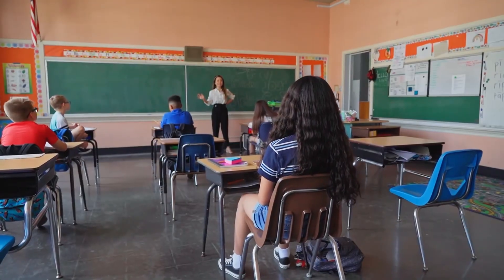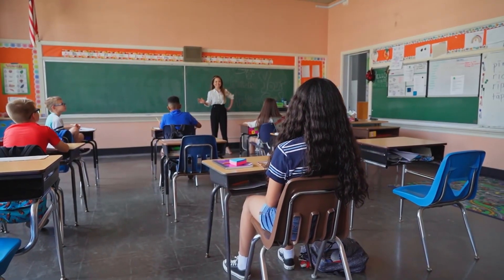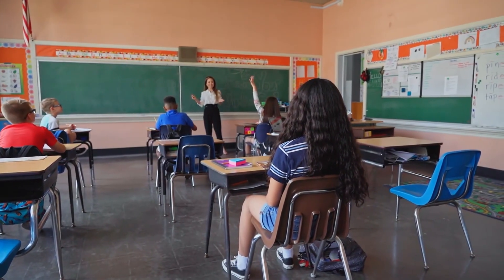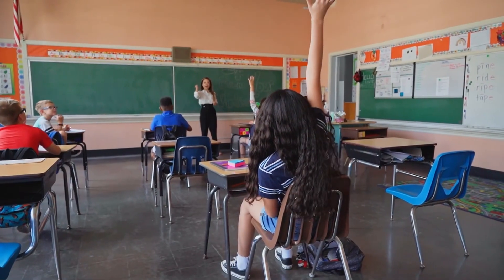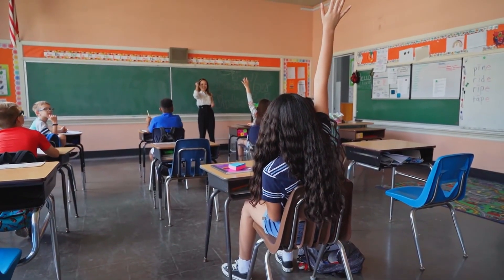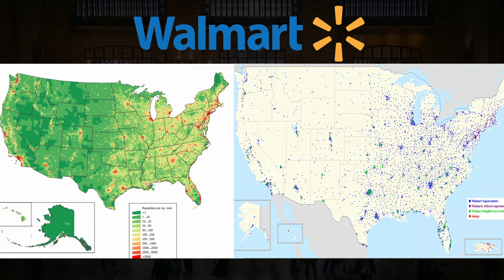Another good example is schools, as school districts generally tend to get funding based on the number of students present. Densely populated regions will also attract more businesses and affect economic processes. Take a look at this population density map of the United States and the distribution of Walmarts across the U.S. — you'll notice a direct correlation between regions with larger populations and the number of Walmarts in those regions.